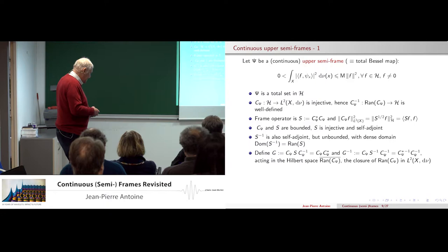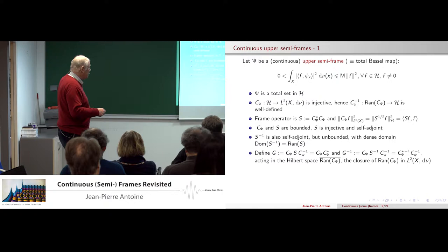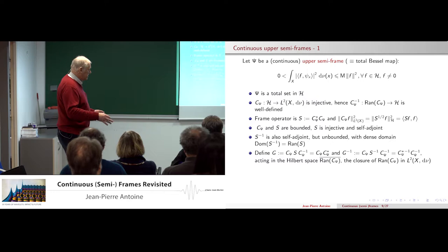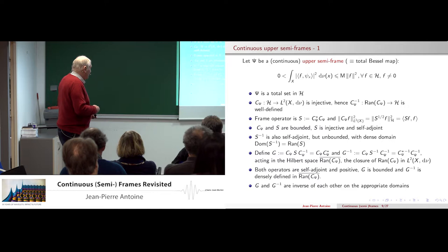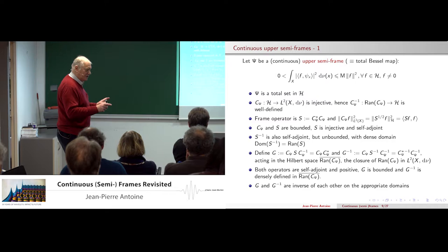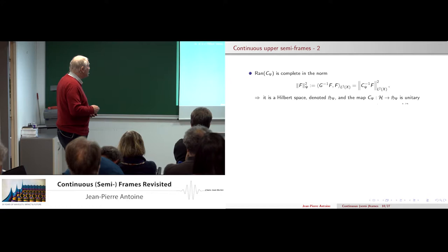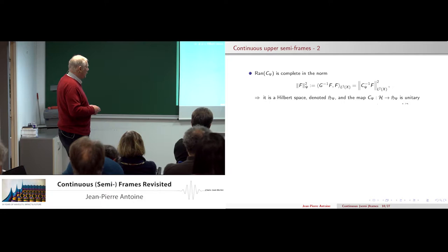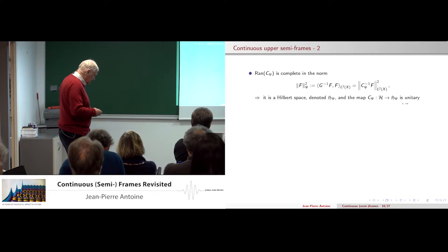You then define operators G and G minus one, which are simply S and S minus one transported to the other side. Both operators act on the closure of the range of C in L2. They are self-adjoint and positive. G is bounded, G minus one is unbounded but densely defined, and they are inverses of each other on the appropriate domain. The range is complete in the new inner product with G minus one, giving again the new Hilbert space Gothic H sub psi, and the map from H to that space is unitary — exactly as before in the continuous frame case.